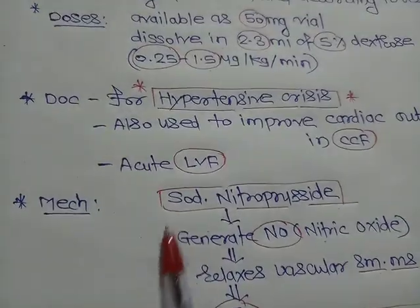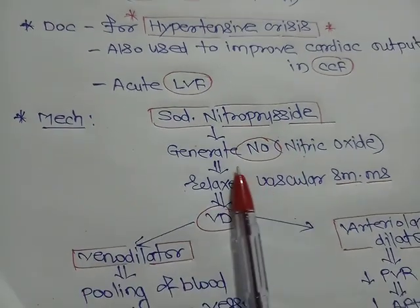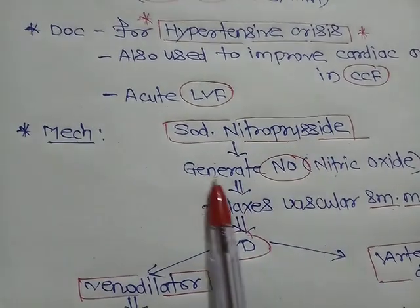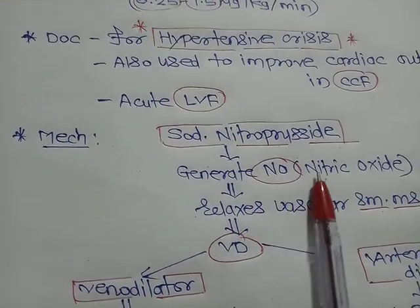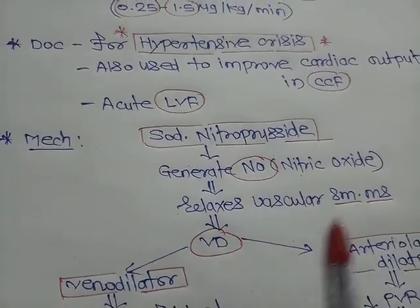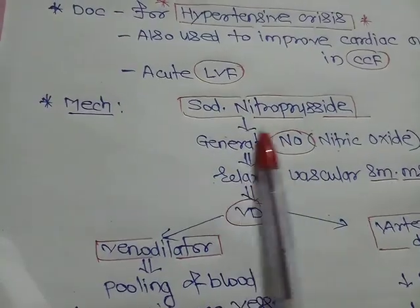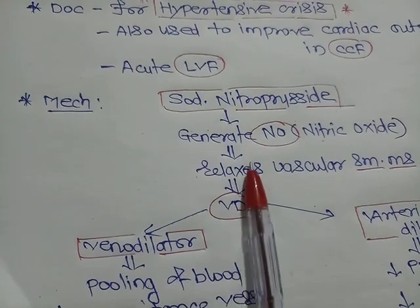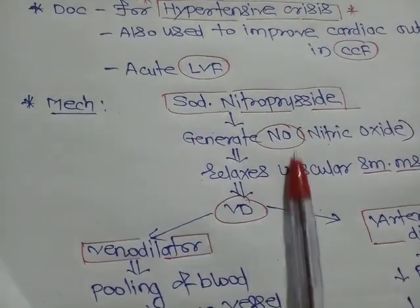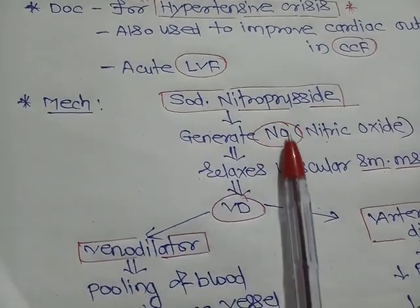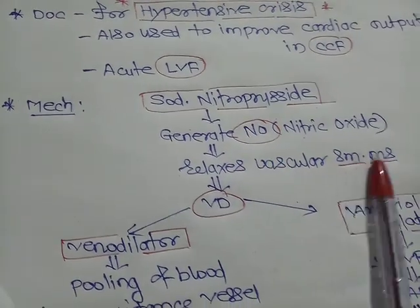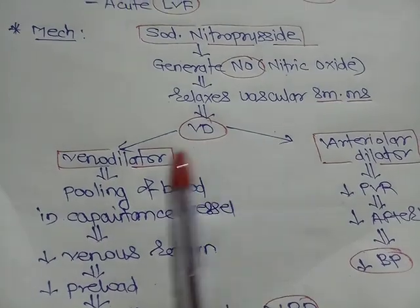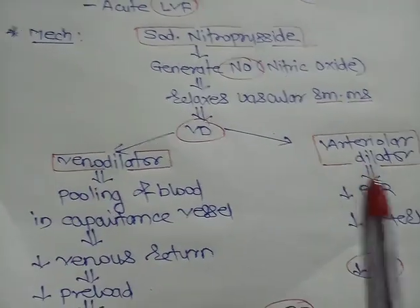Sodium nitroprusside acts by generating nitric oxide (NO), which relaxes vascular smooth muscle. This means it is a vasodilator — specifically both a venodilator and an arteriolodilator.